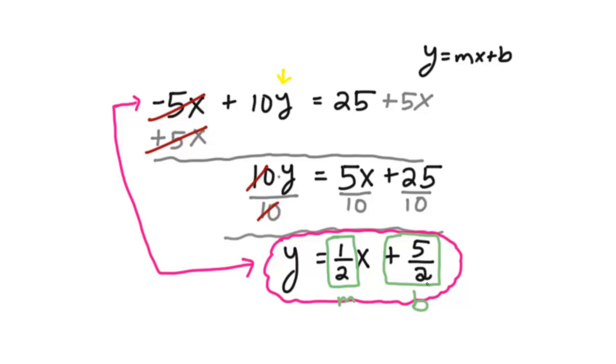Remember, the b is the y-intercept, where if you were to graph this line, it's where the line crosses the y-axis. Hence, it's called the y-intercept.